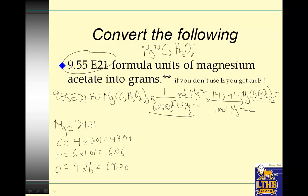I'm going to add all those together for my go to the periodic table number. 24.31 plus 48.04 plus 6.06 plus 64 is 142.41. Again, I have three sig figs in my given, so I'm going to give three sig figs in my answer. 9.55E21 divided by 6.02E23 times 142.41 equals 2.26 grams. Now, why does this big number turn out to be such a small number of magnesium acetate grams? Well, remember, this number is so big because formula units are so small.